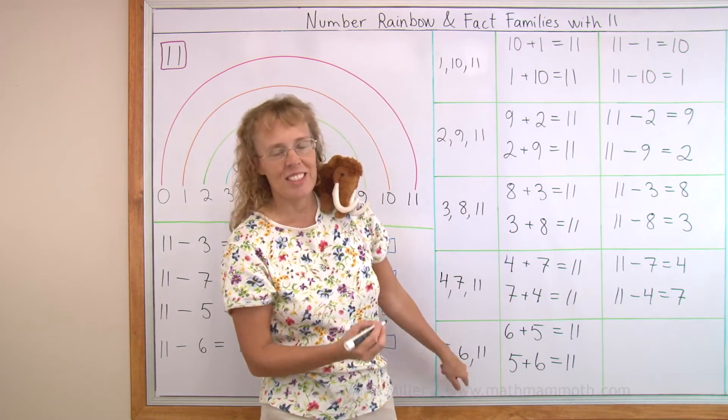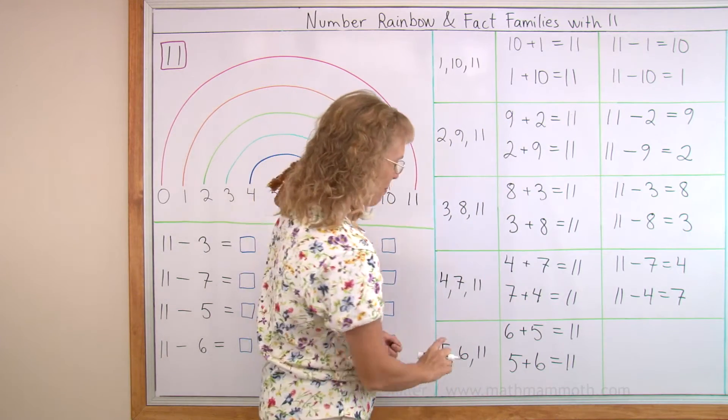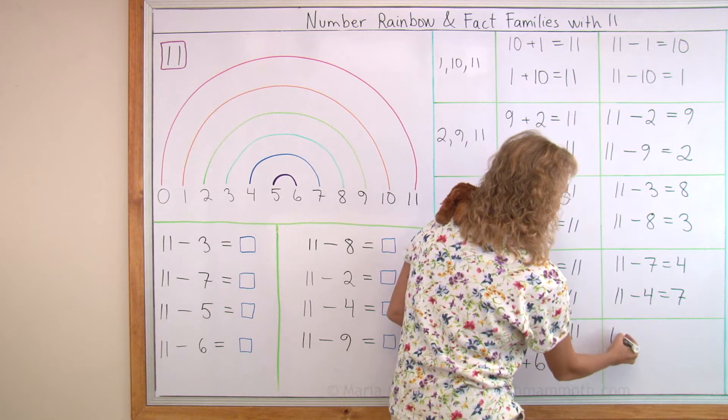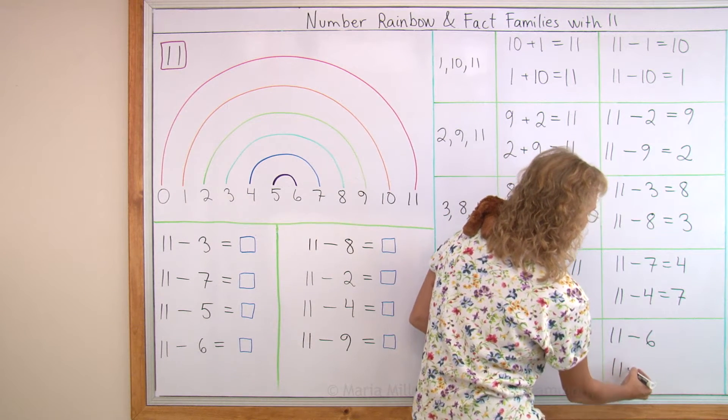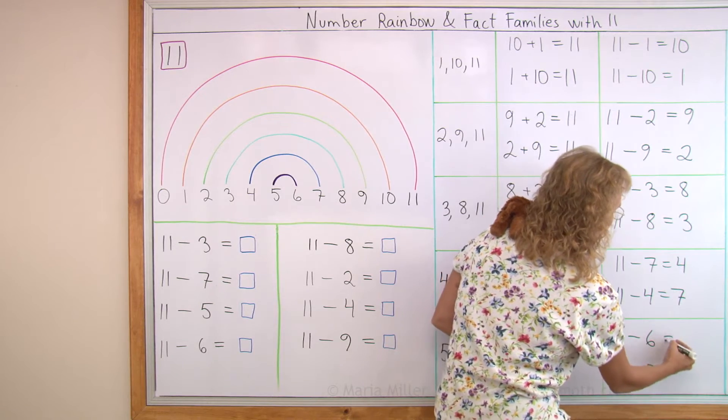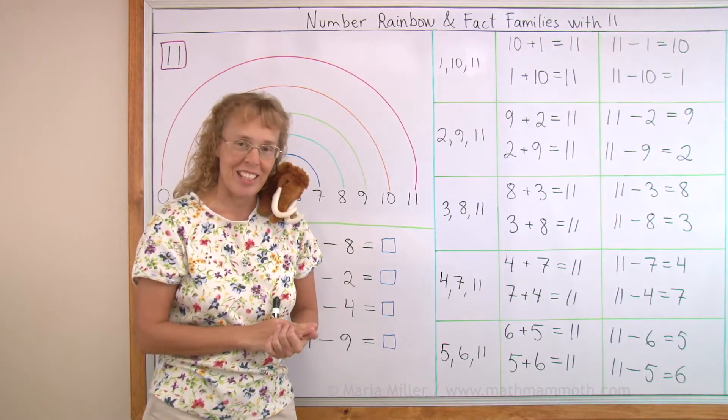And lastly 5 and 6 make 11. And we need to write the two subtractions for this fact family. And it starts with 11, right? And then we either subtract 6 or subtract 5 and we get 5 or we get 6. Okay, now all of that is filled in.